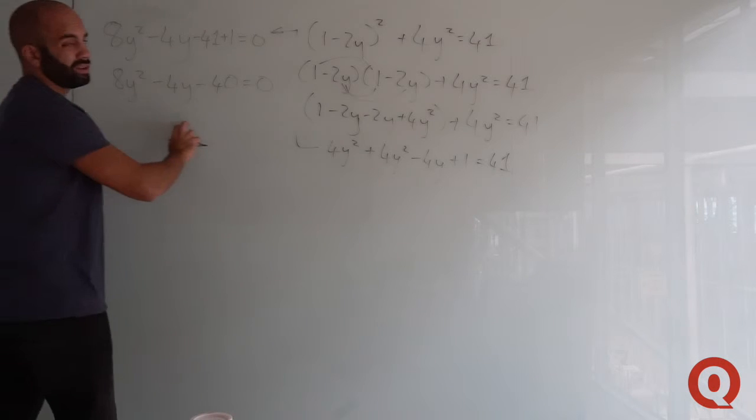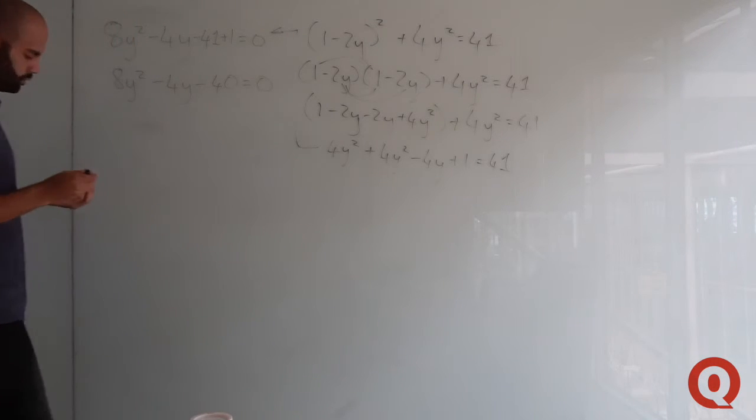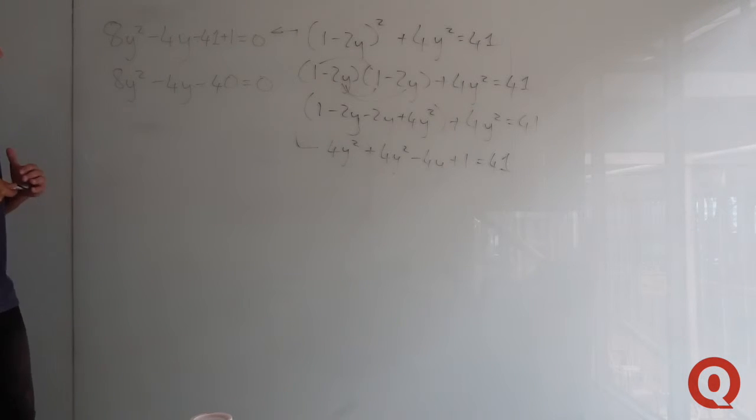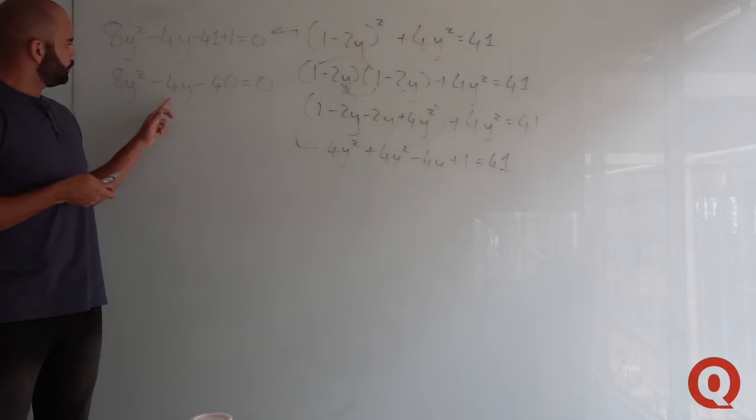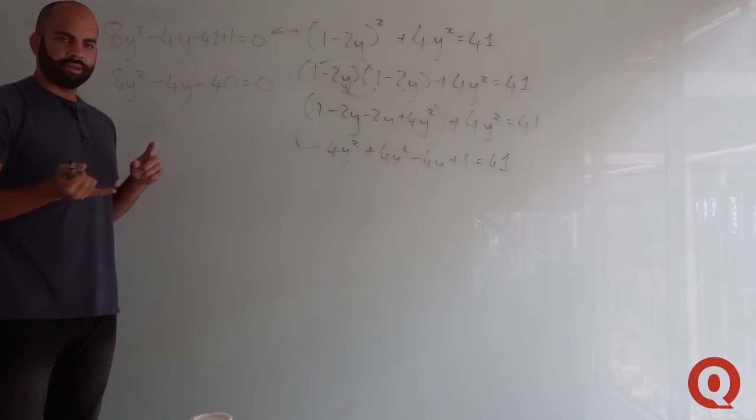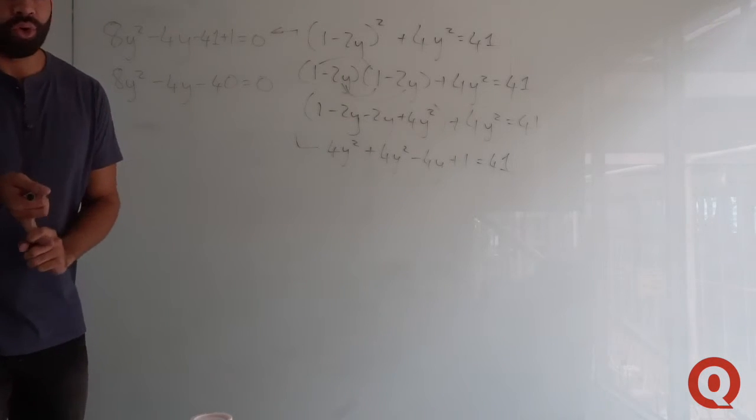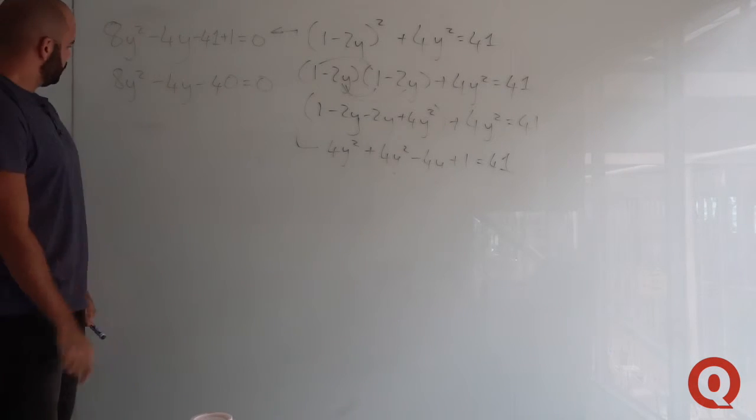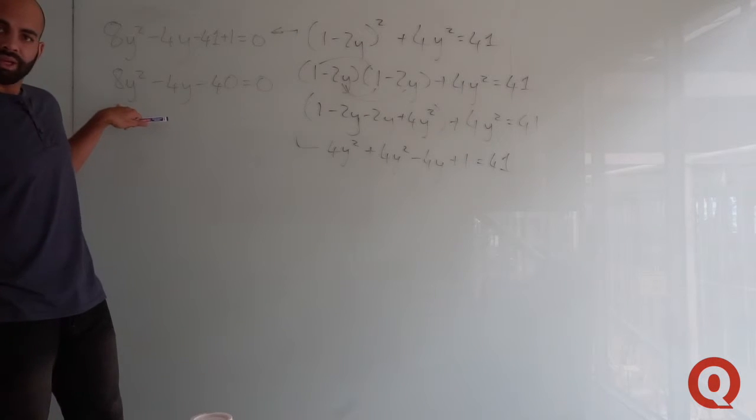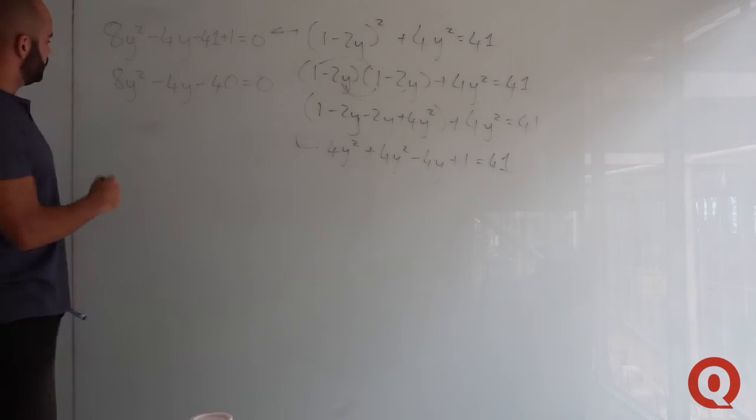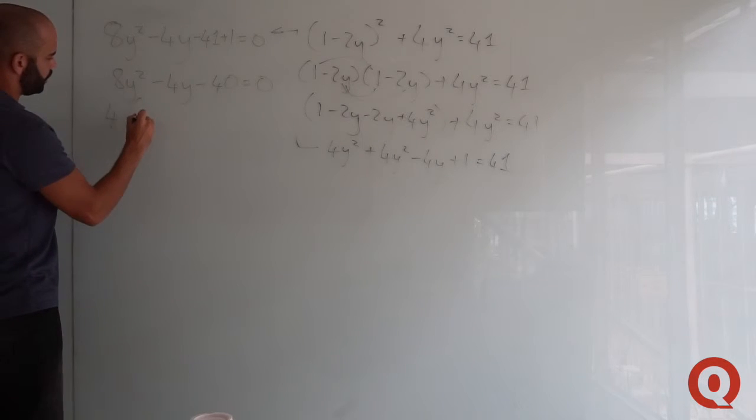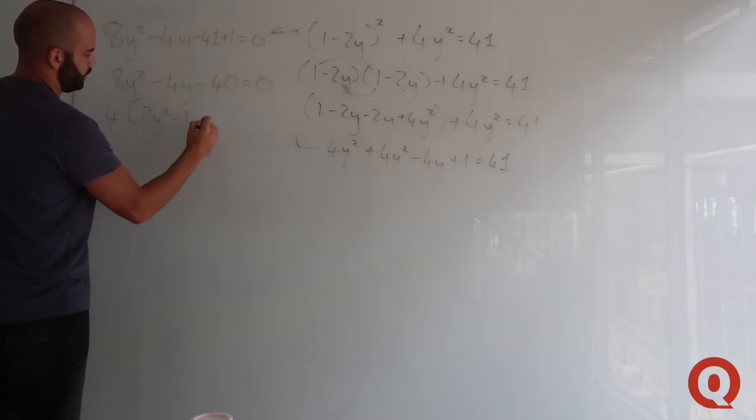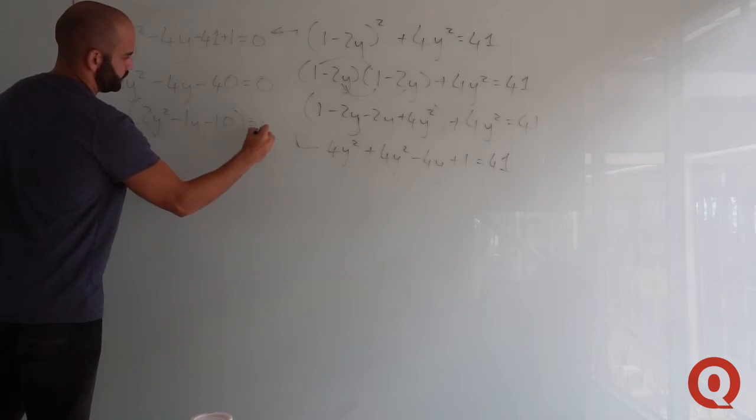You've got it in standard form, but there are a few simple things you could do. Looking at the terms, you've got 8, 4, and 40. The highest common factor would be 4. Take 4 out as a common factor: 4(2y squared minus y minus 10) equals 0.